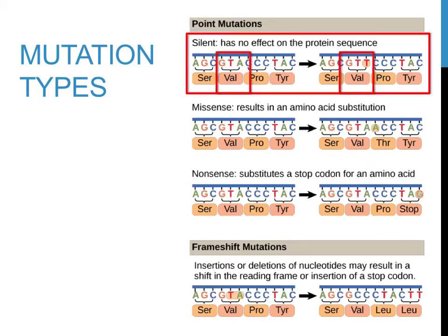Silent mutations, highlighted here, are named quite appropriately. They are silent because the effects cannot be heard, so to speak. While there is a change in the genetic code, the amino acid that's produced is the exact same. This is possible because of the redundancy in the genetic code. Note that the sequence GTA changes to GTT. Both amino acids that are produced, however, are valine.